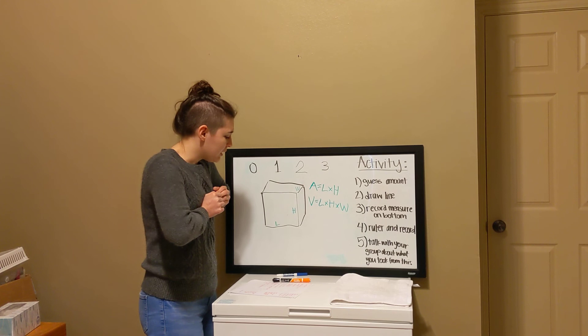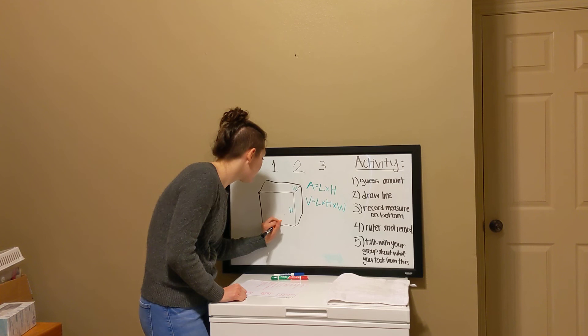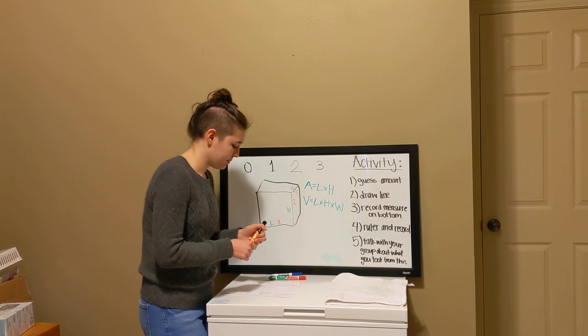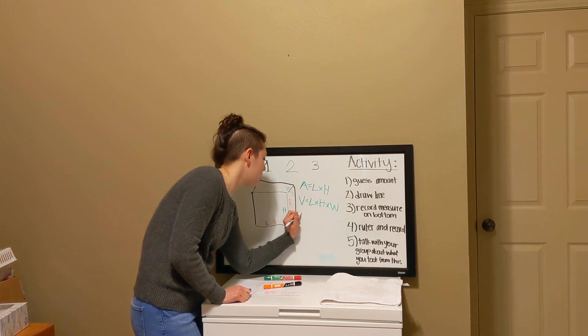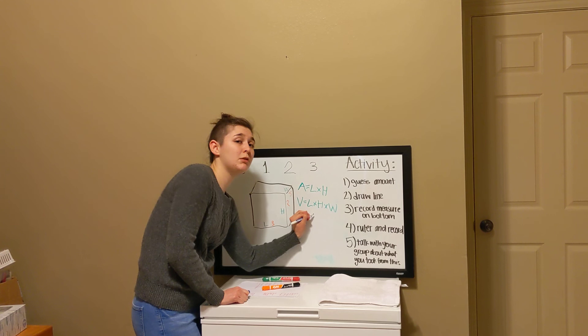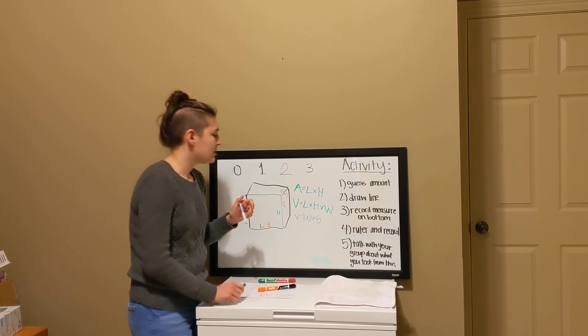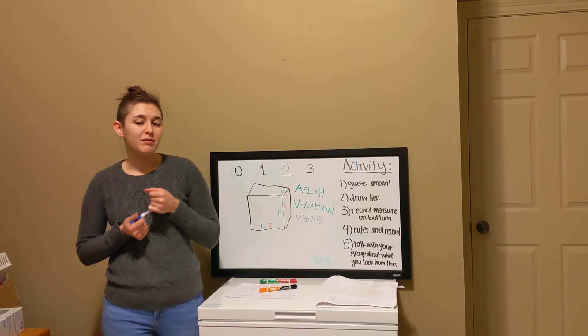Let's do an example real quick. Say I make the length 3, the height 2, and the width 5. That means whenever I do my equation, it would be V equals length — so 3 — times height, which is 2, and then times 5, which is our width. Jacob, do you know what that would equal? Do you know what 3 times 2 times 5 is?